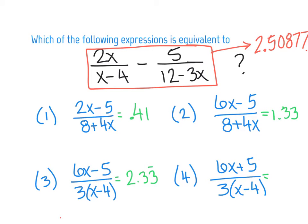Okay, so here are some of my results here. Let's see, when I typed in the original expression, and again, I stored a 23 for X, I got an answer of 2.50877, and you probably don't even need that many decimals, but I just wanted to be on the safe side. Typing in choice one, I got 0.41, not a match. So we could eliminate that choice.